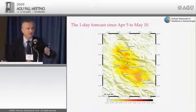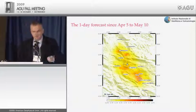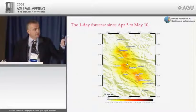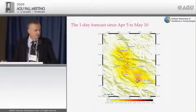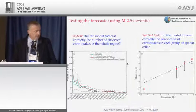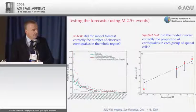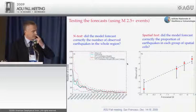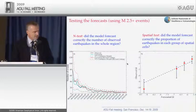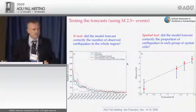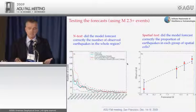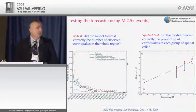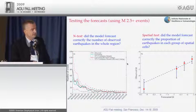We have produced maps like this until the end of October, and also reproduced the increase in probability observed during the G8 meeting held in L'Aquila in July. After 40 days, we tested whether our forecasts had some reliability compared to what we observed. These are the results of the N-test: a statistical test checking whether the number of earthquakes that really occurred is compatible with our forecast.